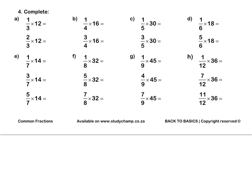Question 4. A third times 12 is 4; therefore, two-thirds times 12 is 8. 12 divided into 3 equal parts is 4, and 2 times 4 is 8. Let's do E together. Press pause to complete question 4 by yourself.